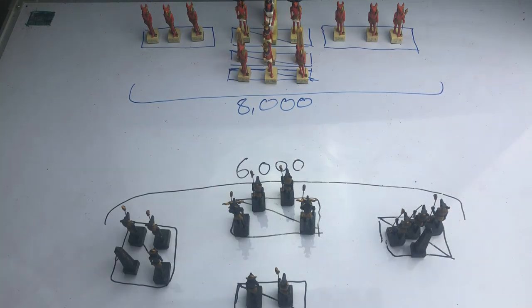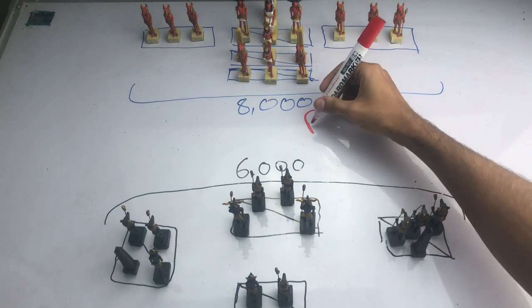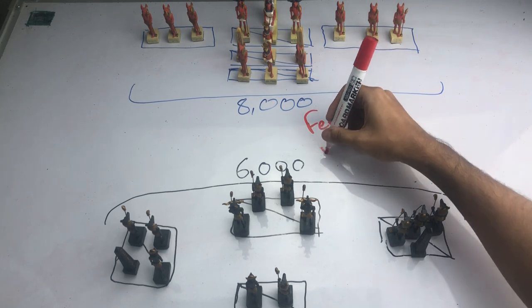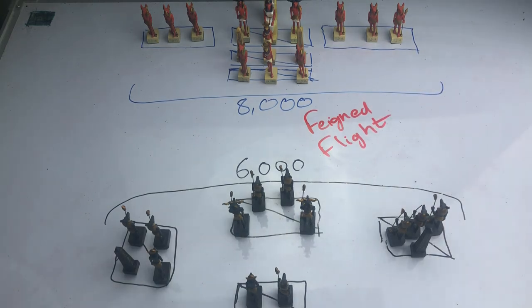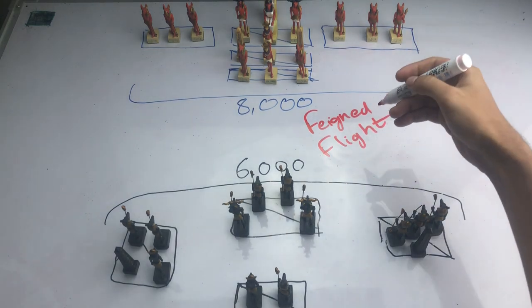And at this battle, the tactic that the Mongols are going to so excellently display is known as the feigned flight. Not a tactic that they made or invented—it had been around since ancient Greece, ancient Syria—but they were masters of it, they perfected the feigned flight.